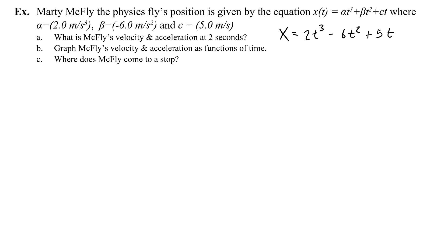Let's write a more math-friendly version: x equals 2t cubed minus 6t squared plus 5t. Right away I can make the velocity and acceleration equations. The velocity equation is going to be 6t squared minus 12t plus 5, and the acceleration equation is going to be 12t minus 12. Now I can find the position, velocity, and acceleration at any time because I have three equations describing everything about the object's motion.